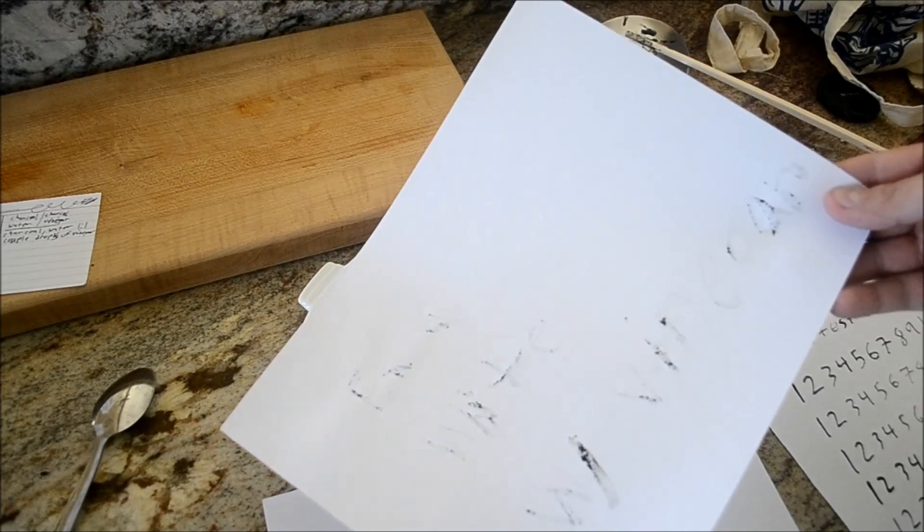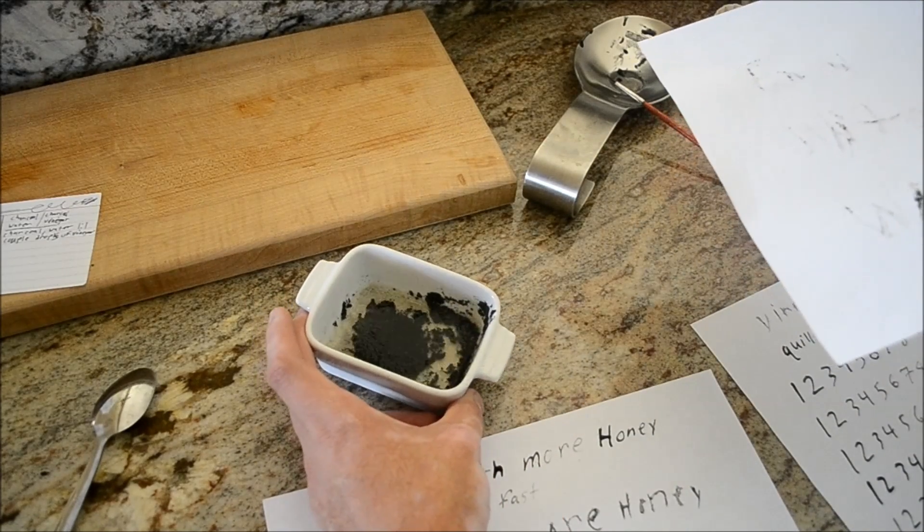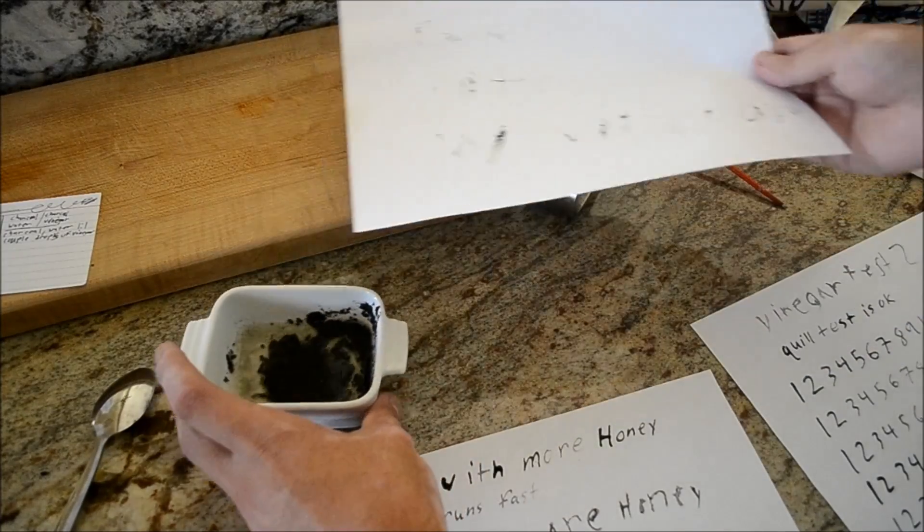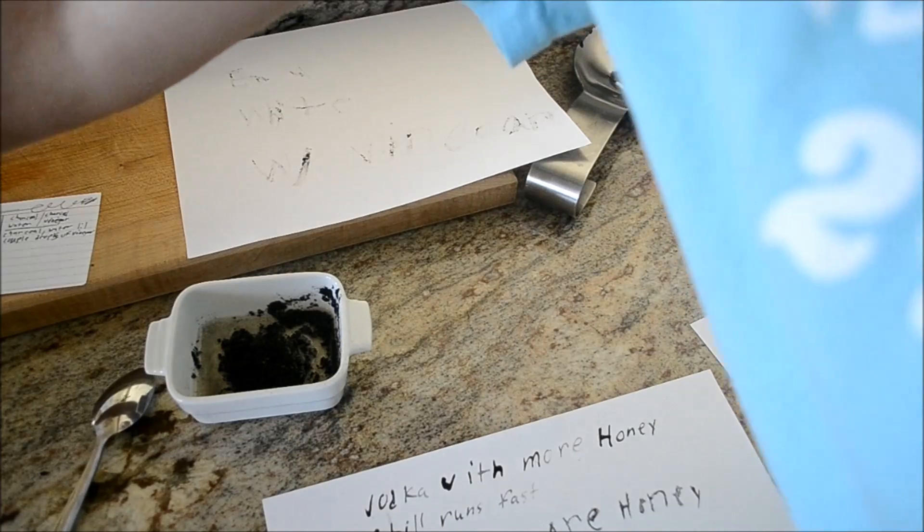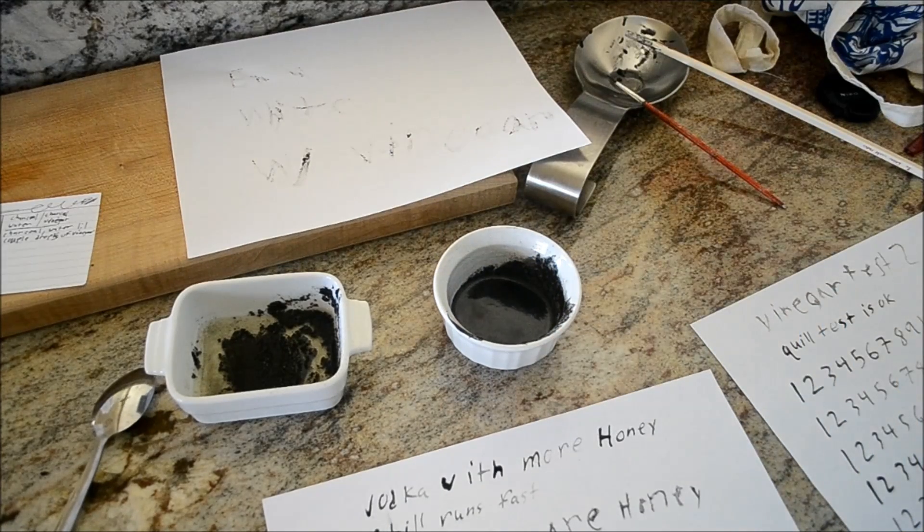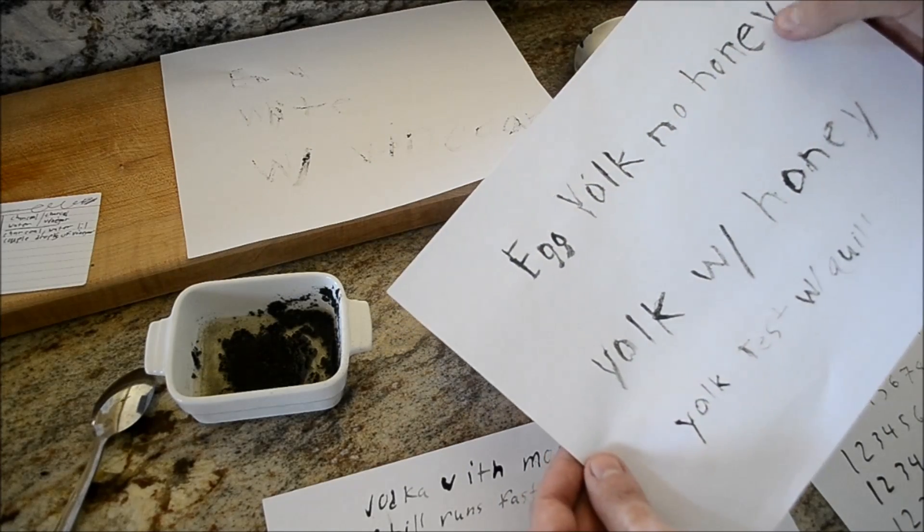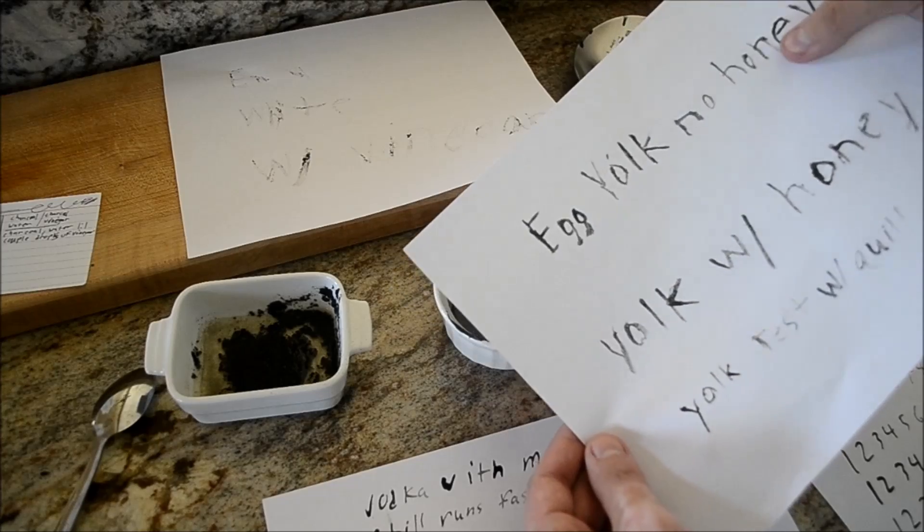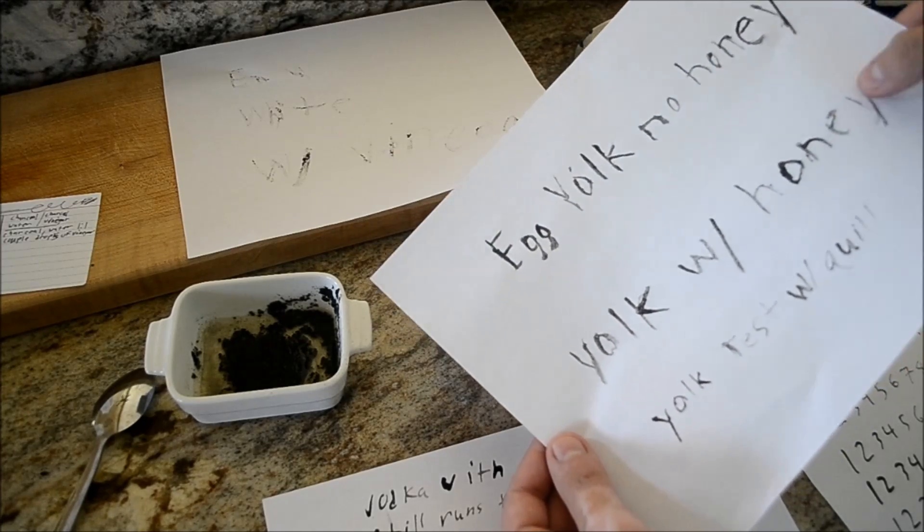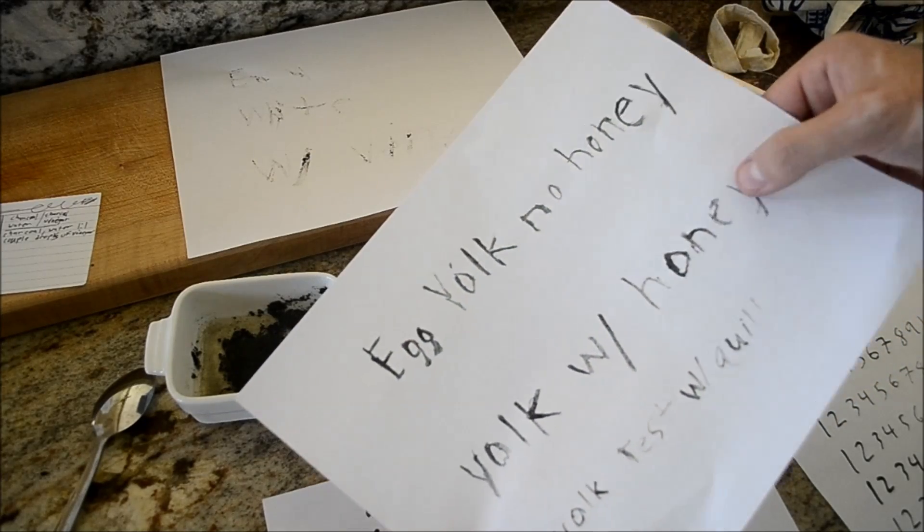So, the egg white didn't work really at all. It always separated from the charcoal, didn't ever really mix together. So, I'm going to dump that one out. The egg yolk worked better than the egg white and it seems to be the best at holding the pigment onto the paper without it rubbing off.